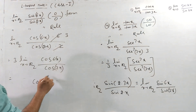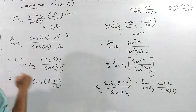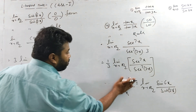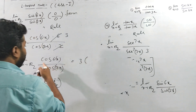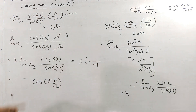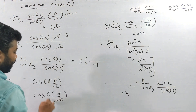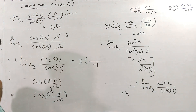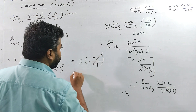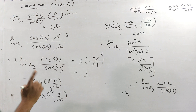Applying L'Hôpital's rule once more to sin(6x)/sin(2x), we get cos(6x) times 6 over cos(2x) times 2, giving 3 times cos(6x)/cos(2x). Substituting x = π/2: cos(3π)/cos(π) = (-1)/(-1) = 1, then times 3 gives the answer of 3.